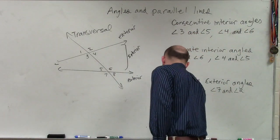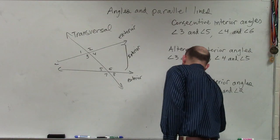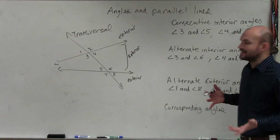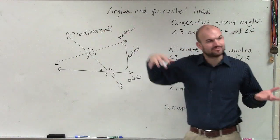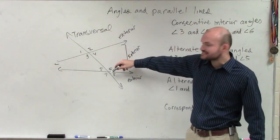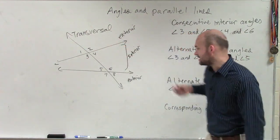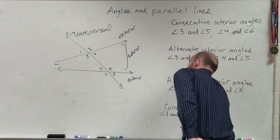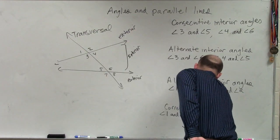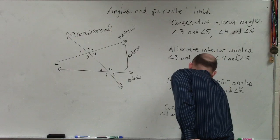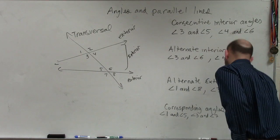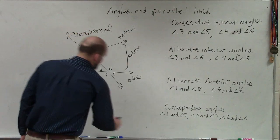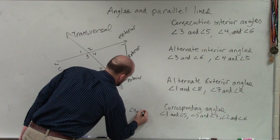And then the last one was corresponding angles. When we talked about corresponding angles, what we saw is corresponding angles are, in each little intersection, in the exact same kind of position. So we could say that three and seven are corresponding angles — one and five, two and six, four and eight. We have angle one and five, angle three and angle seven, angle two and angle six, and angle four and angle eight.